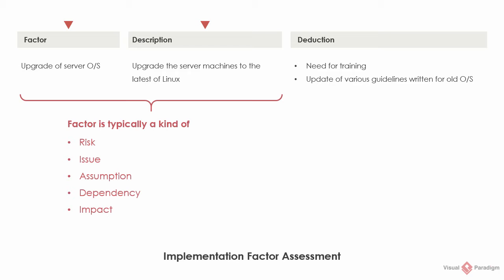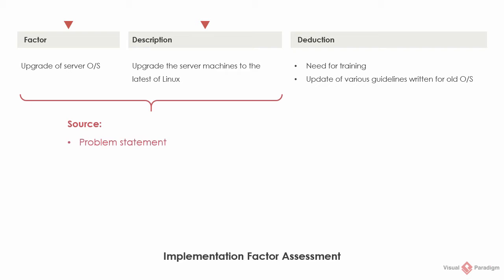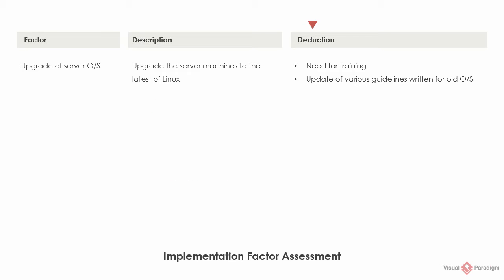Other factors include impact, such as the dismissal of employees. You can identify the factors based on the problem statement, the business cases created, and the gaps identified. New factors are deduced by assessing a given factor. The new factor usually leads to a decision of extra work, a reminder of problem awareness, or further planning for communication. By assessing the factors deduced, new factors can be found, constituting the actions or changes needed to be taken to implement the target architecture.